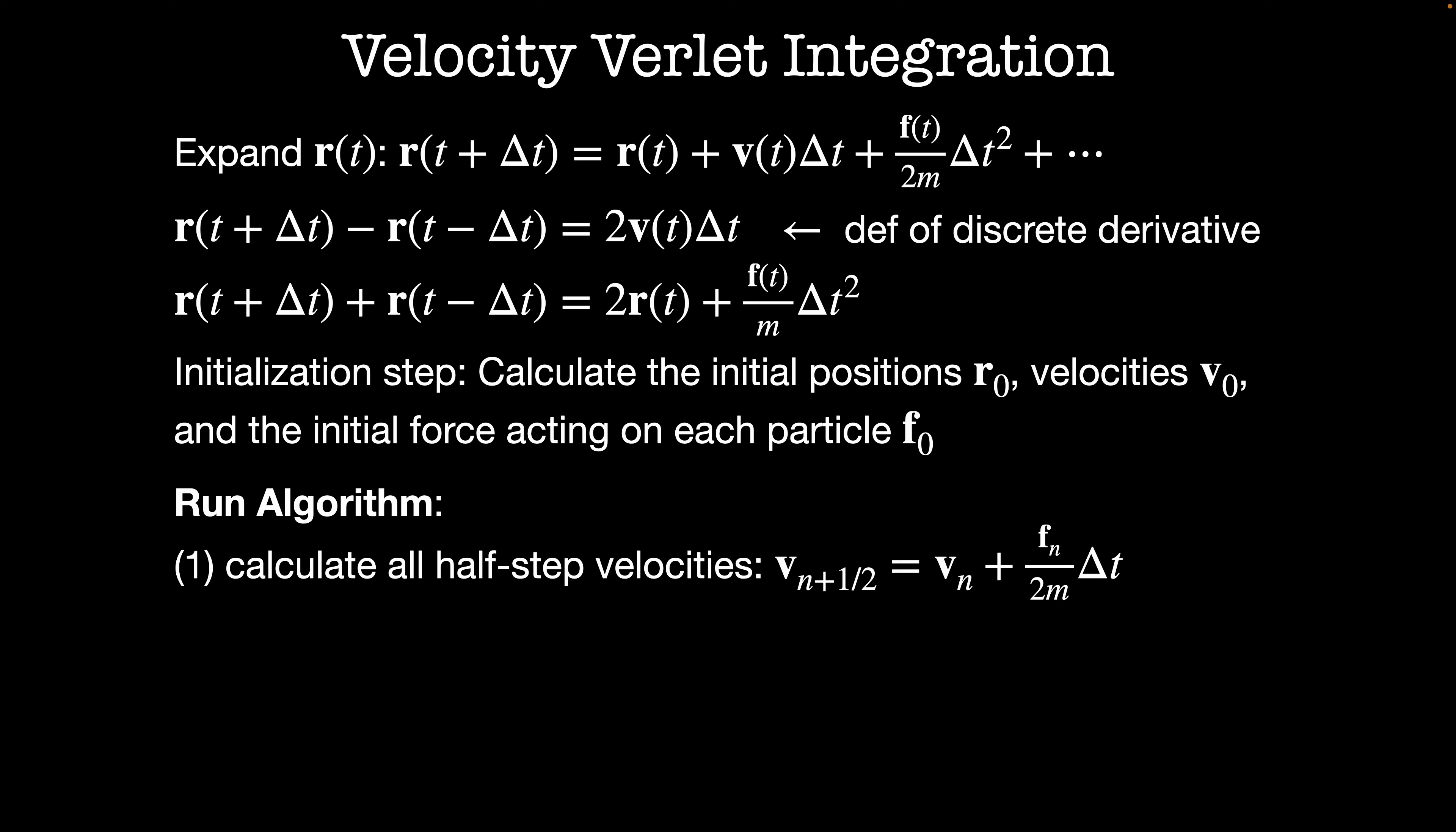So this is our algorithm. Step one, we're going to calculate all of the half step velocities. I do this by a discrete integration of the force with time step delta t over 2, so that the velocity halfway through the integration step, v_{n+1/2} is equal to v_n plus f_n divided by 2m times delta t. Step two, we're going to update all of the positions based on this half step velocity. So the new position r_{n+1} is our old position r_n plus the half step velocity times delta t.